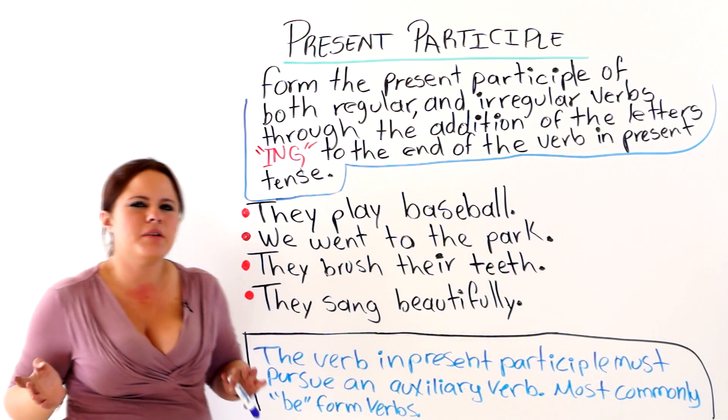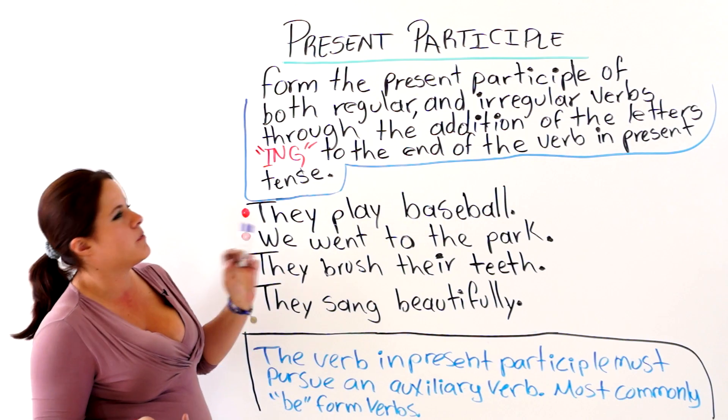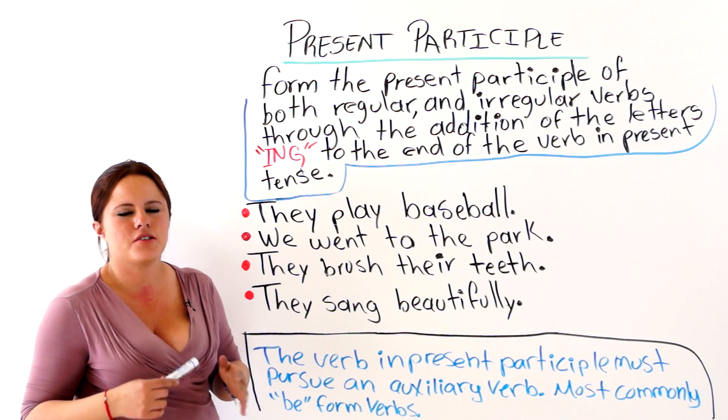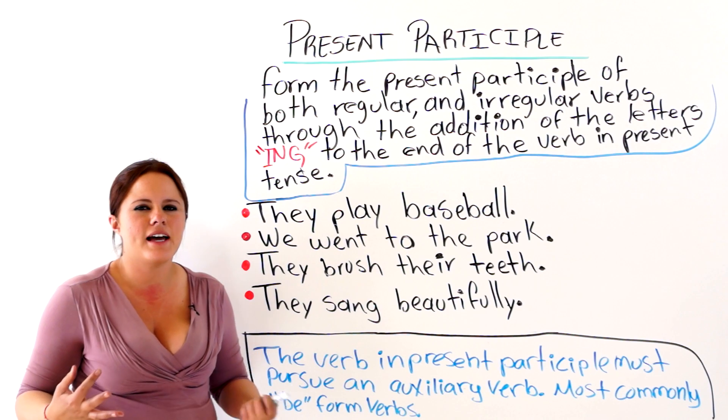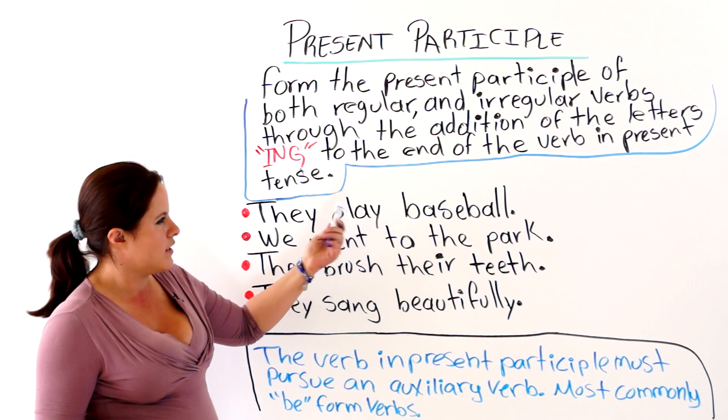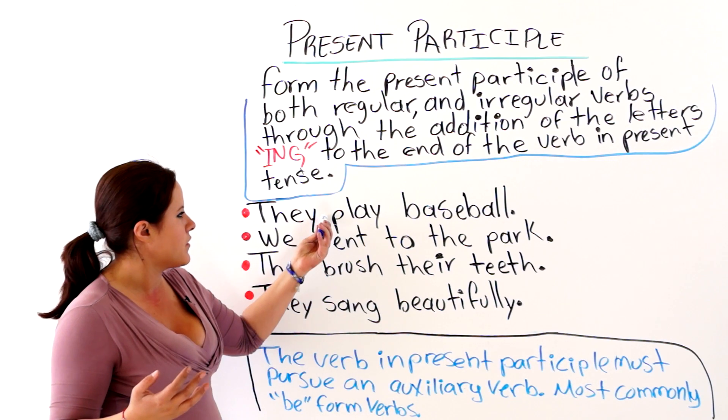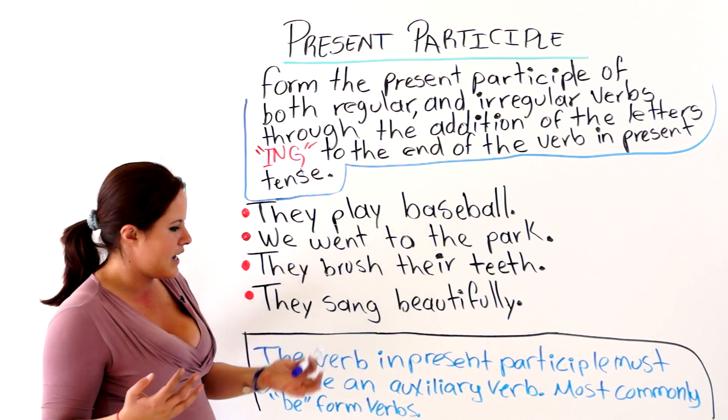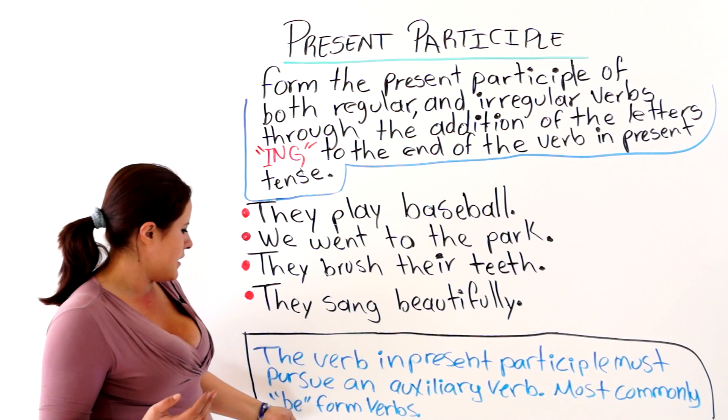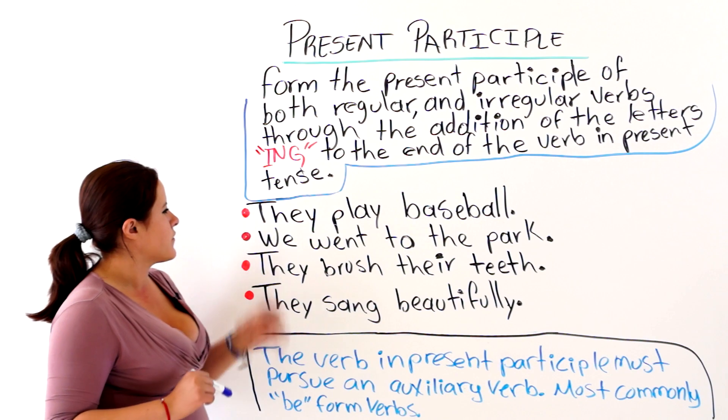Now you are going to help me change these verbs into the present participle tense. Remember that we must add ing to the end of the verb in present tense. And before this verb, we must add a be form verb.